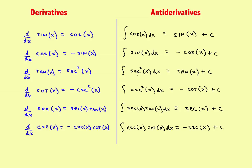The integral of secant squared gives you tangent. The antiderivative of cosecant squared gives you negative cotangent. The antiderivative of secant tangent gives you secant. And finally, the antiderivative of cosecant cotangent gives you negative cosecant. So there are the basic antiderivatives.